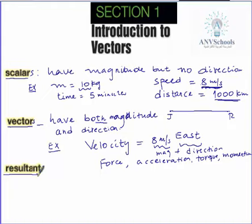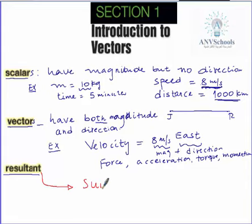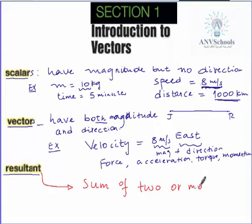You also need to know the meaning of the resultant of two vectors. When we have two vectors, we can add or subtract them. The resultant of two vectors is defined as the sum of two or more vectors. A resultant vector is the vector that results from the sum of two or more vectors.